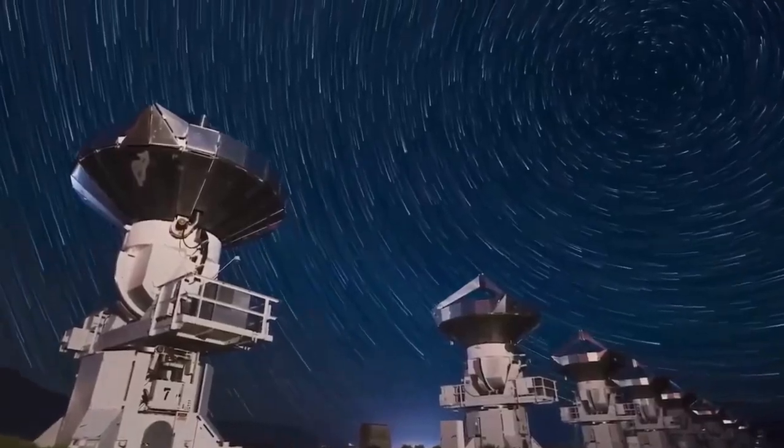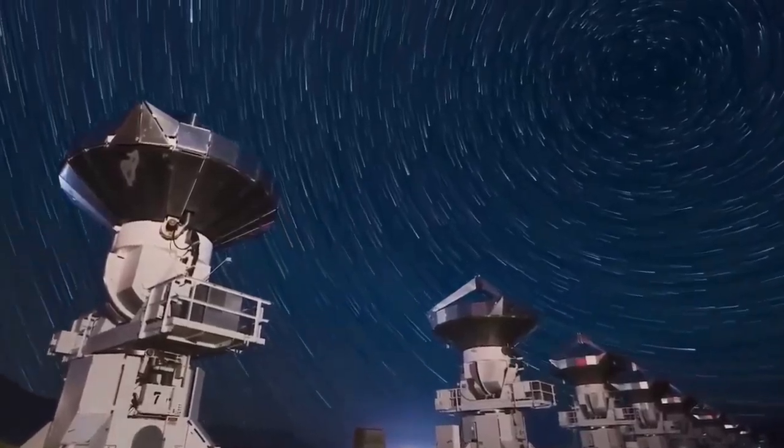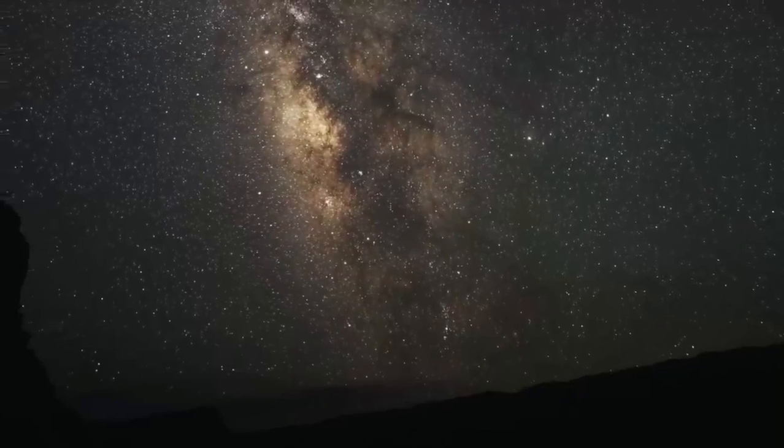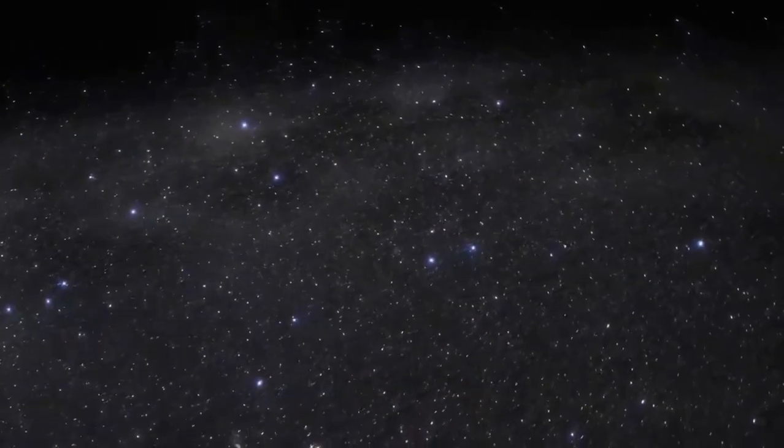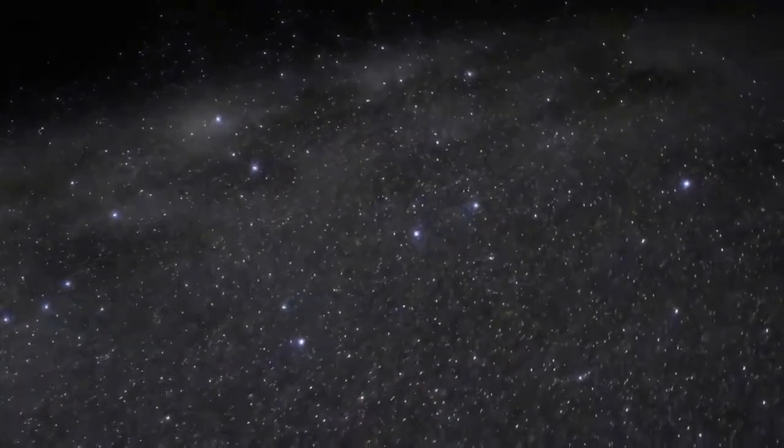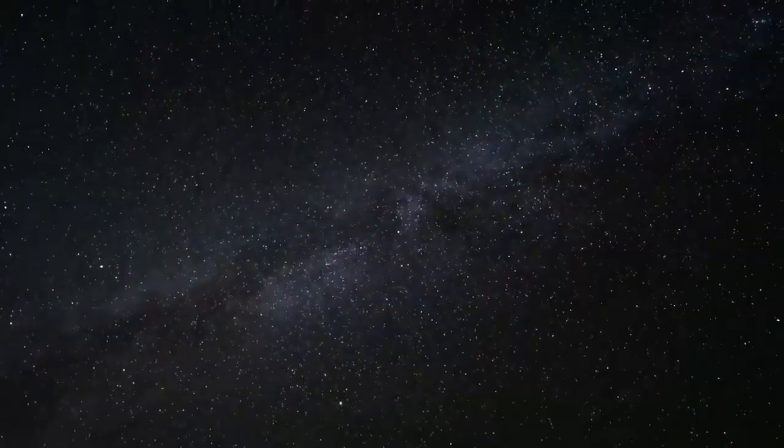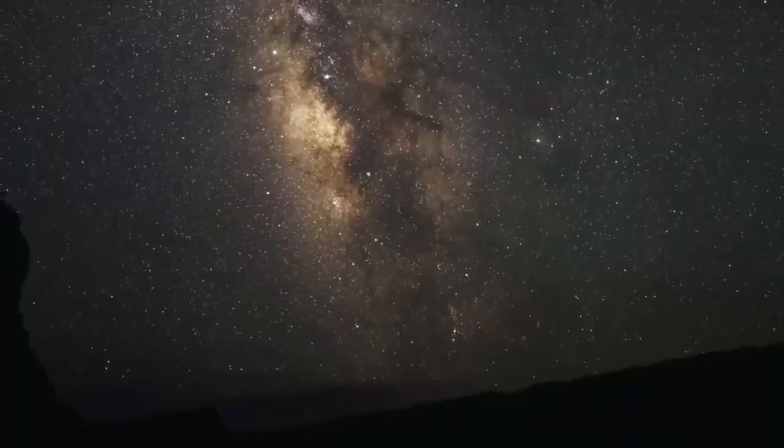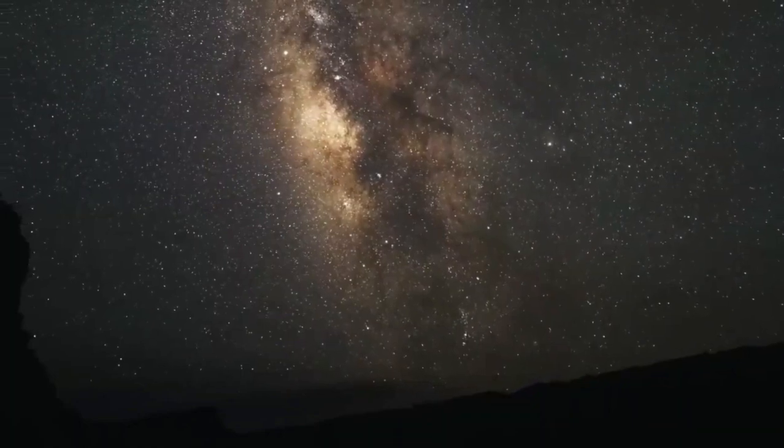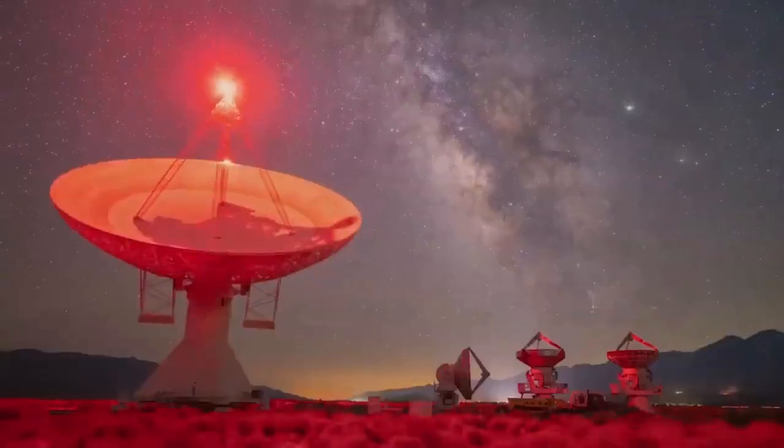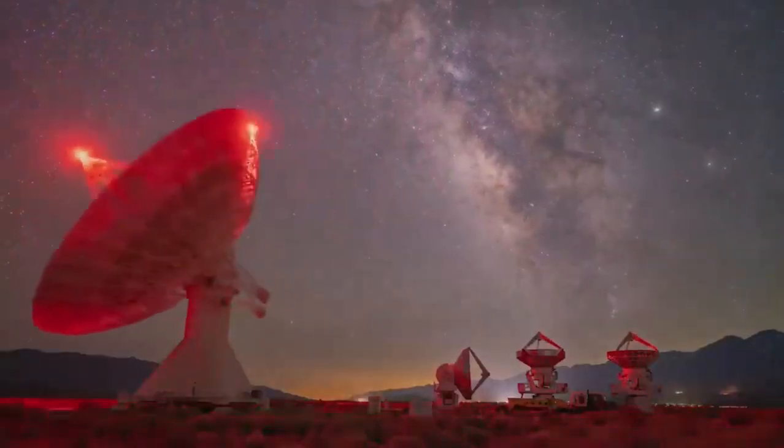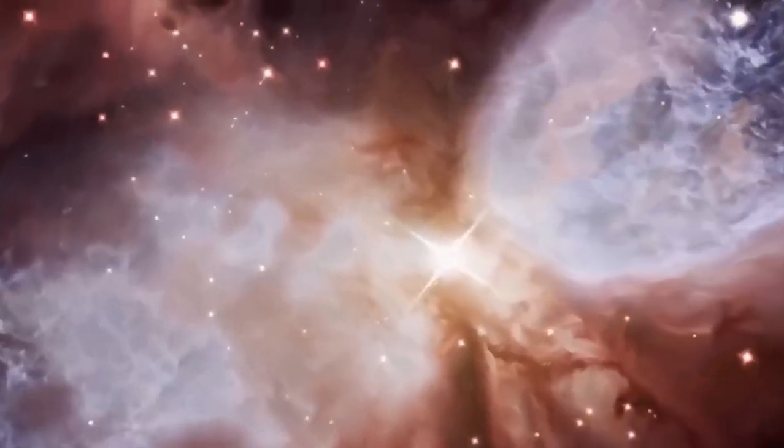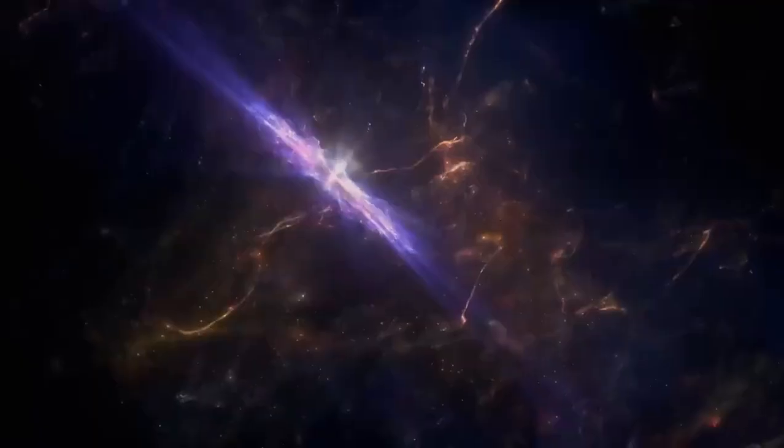Betelgeuse loses about one solar mass every 10,000 years. The red star is surrounded by a nebula because this material is being ejected unevenly from the star in all directions. A cloud of material 250 times larger than the star surrounds Betelgeuse. The size of this nebula is also thought to be 30 astronomical units or 30 times the solar distance. The Sun and Neptune, the furthest planet in the solar system, are separated by this distance.